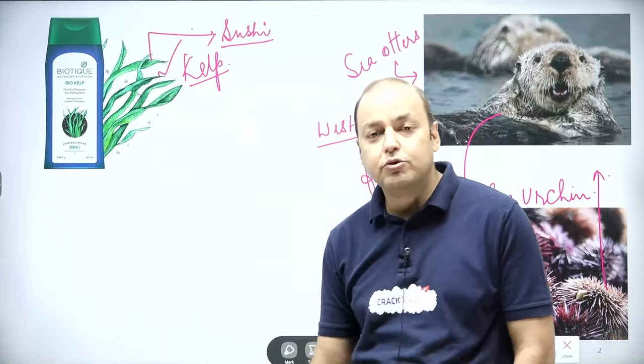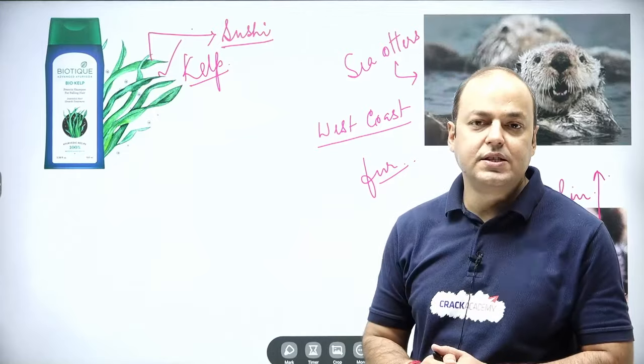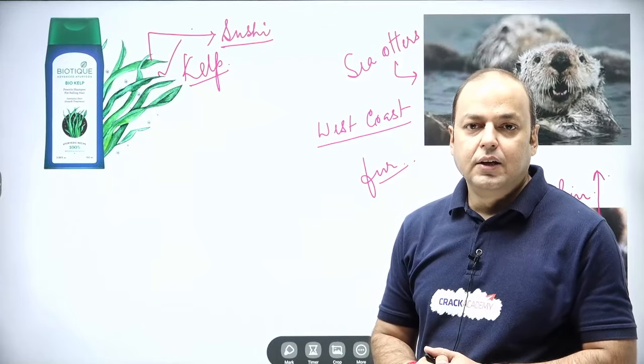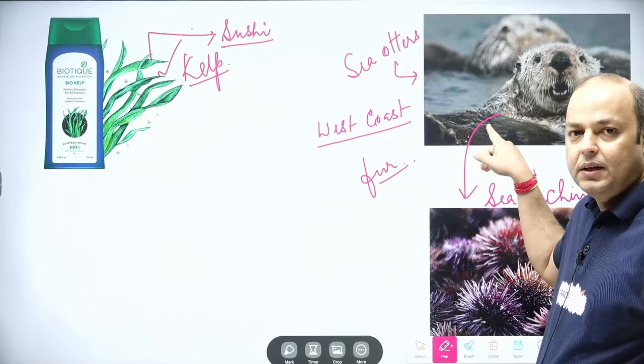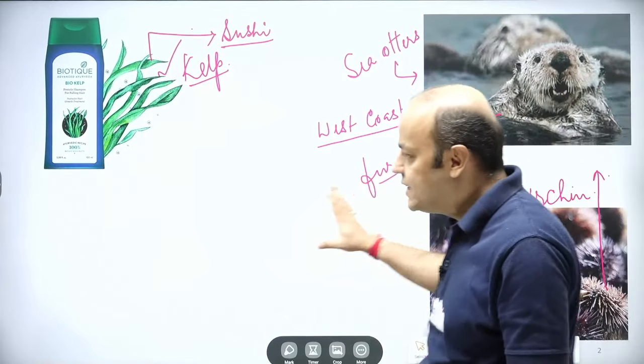They get removed. Why? Because the entire habitat was destructed. So as you can see, the absence of one organism devastated the entire ecosystem.